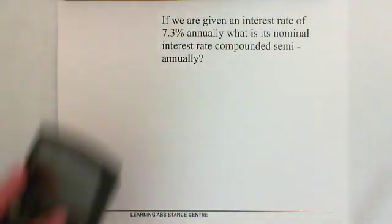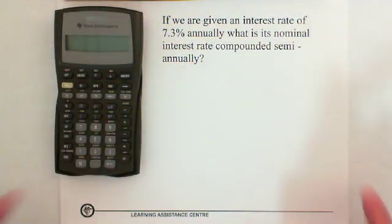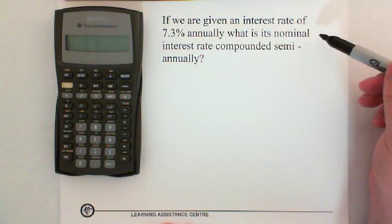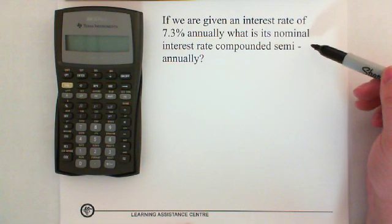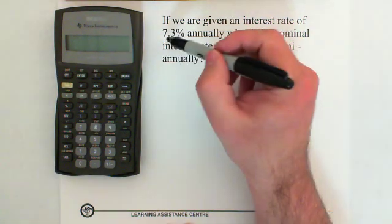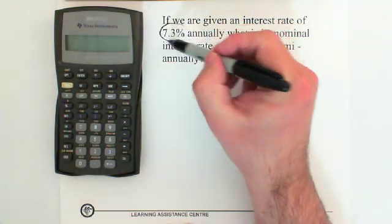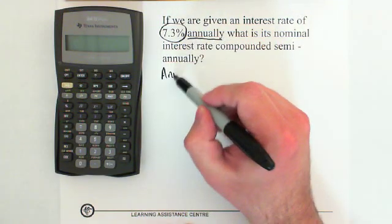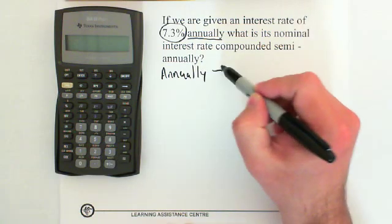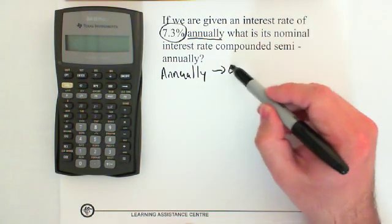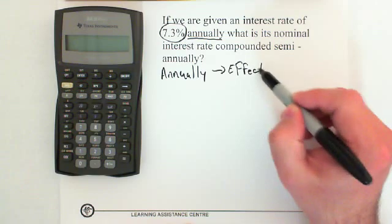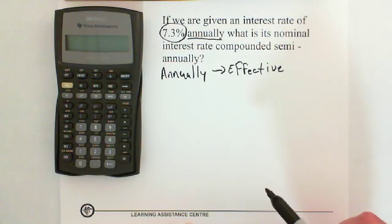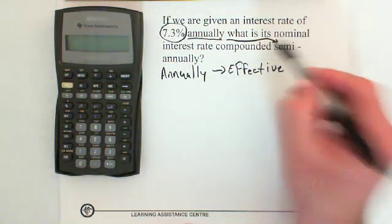Let's try another one. If we are given an interest rate of 7.3% annually, what is the nominal interest rate compounded semi-annually? We've been given 7.3% annually. If you remember from the previous question, annually is like saying effective. So in other words, we've been given effective and we want to change it to semi-annual.